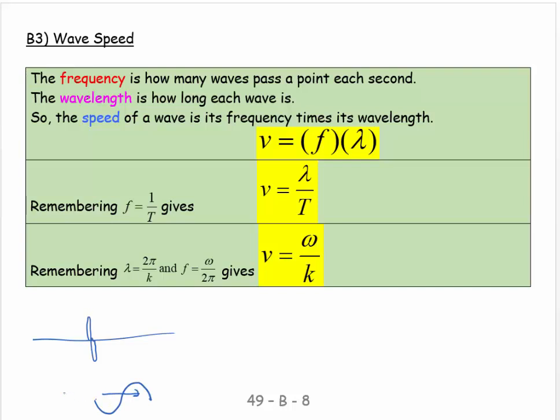And if it happens again, then another one just passed. Then another one just passed. So the frequency is how many waves pass a point each second, and then the wavelength is how long each wave is.